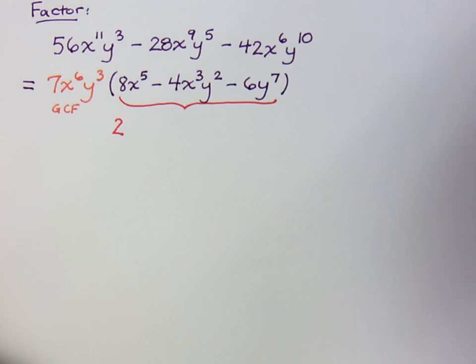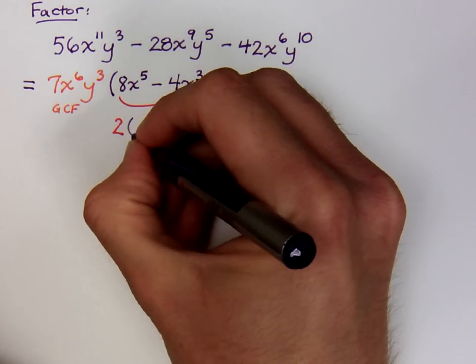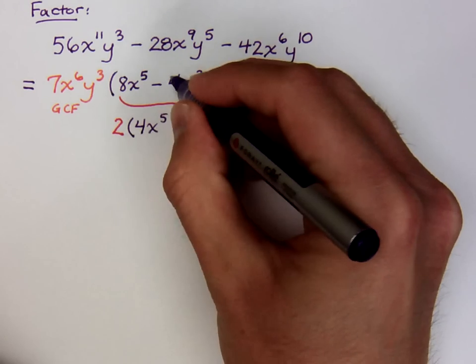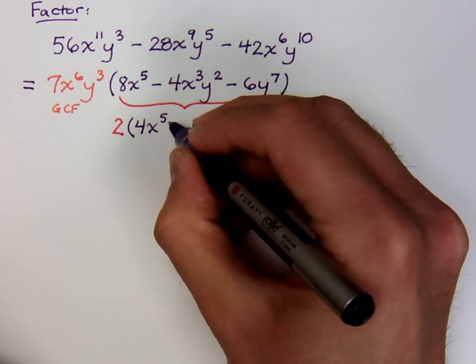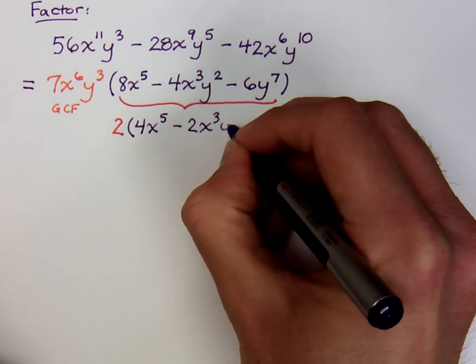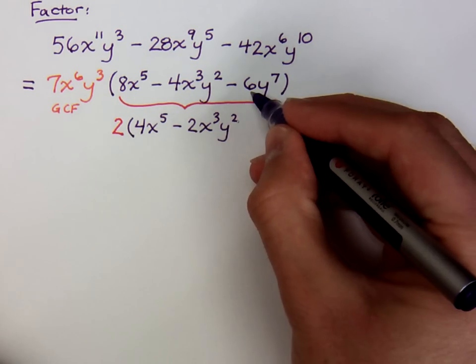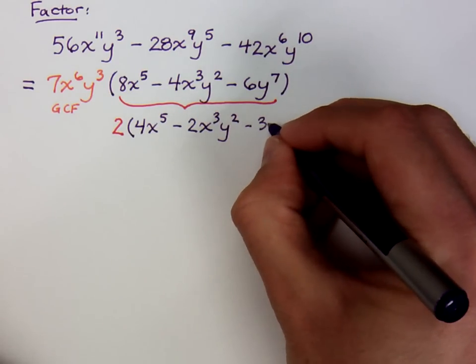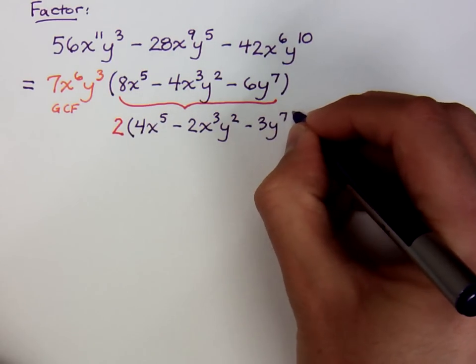Now if I factor that two out, let's see what happens. Two factored out of the eight gives you four, x to the fifth. Negative four, with the factor of two taken out, is now minus two, x to the third, y squared. Negative six, factoring the two out, gives you negative three, y to the seventh.